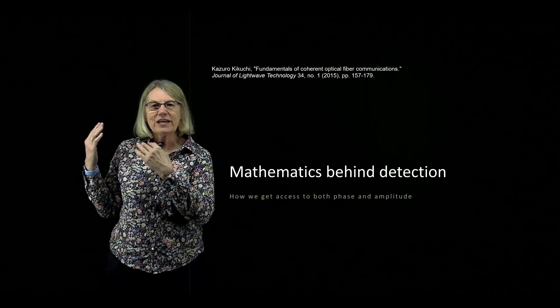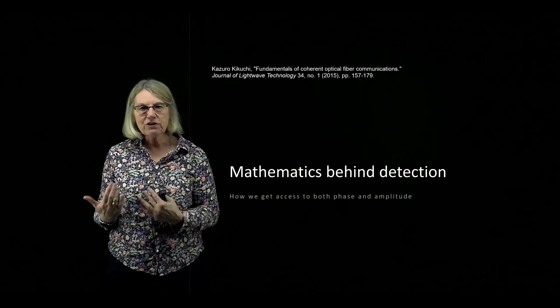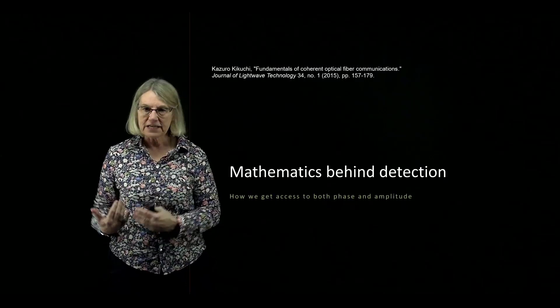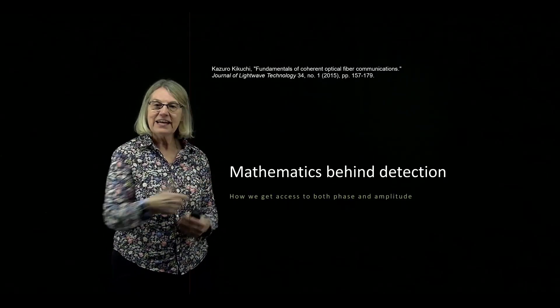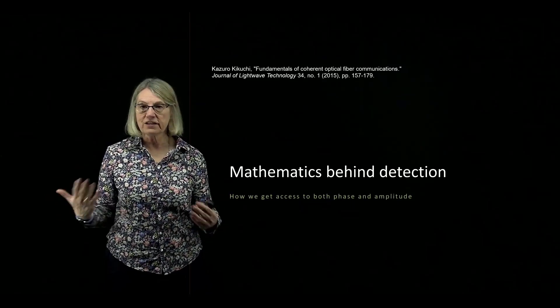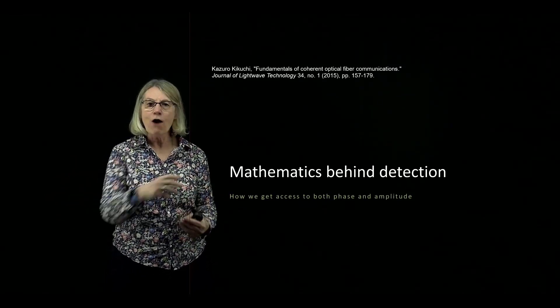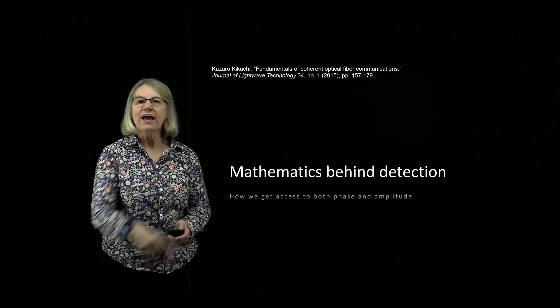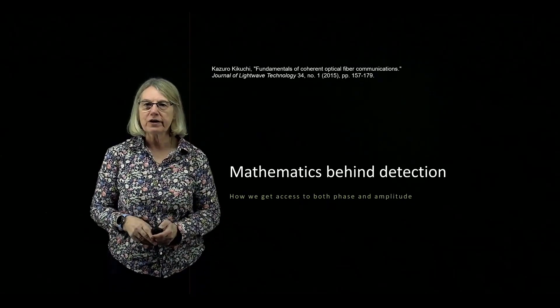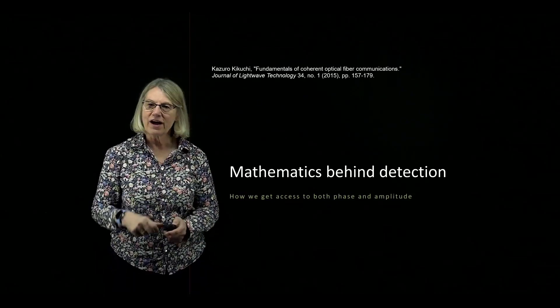We've seen how we could implement a transmitter and detector in optics, and now we're going to see the mathematics behind this detection and how this structure, particularly for the coherent receiver, gives me access to both phase and amplitude. I refer you to the tutorial paper that I draw on heavily.